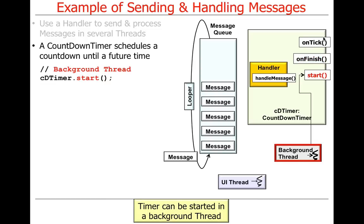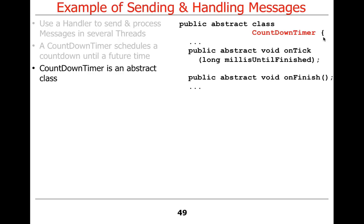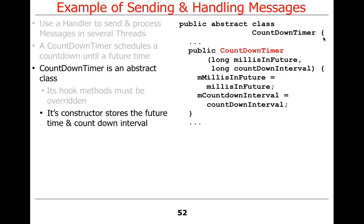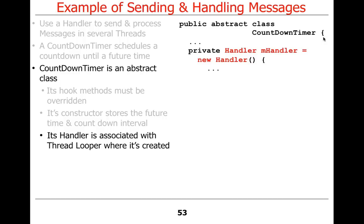CountdownTimer is an abstract class, so you have to subclass it and fill in onTick and onFinish. Here's the constructor: you give it the number of milliseconds in the future when you want it to stop, and an interval - it'll call onFinish when done counting down and onTick at the designated interval. Wherever you create this object, a handler is created. If you create it in the main UI thread, the handler has affinity for the UI thread. The constructor uses thread-local storage to register itself with the looper.